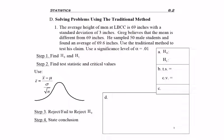Let's go ahead and do an example. Number one reads: the average height of men at LBCC is 69 inches with a standard deviation of 3 inches. Greg believes that the mean is different from 69 inches. He samples 50 male students and found an average of 69.6 inches. Use the traditional method to test his claim. Use a significance level of alpha equals 0.01.